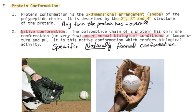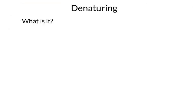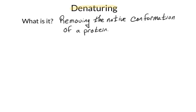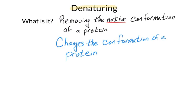What happens when we destroy that native conformation? Well, that is what we call denaturing. Denaturing is removing the native conformation of a protein. That protein will still have a conformation — it just won't be the native conformation at that point. So how do we do that?